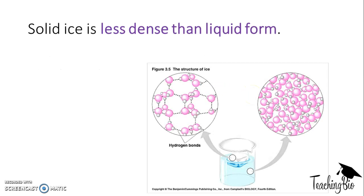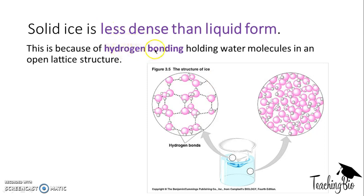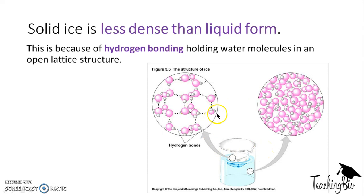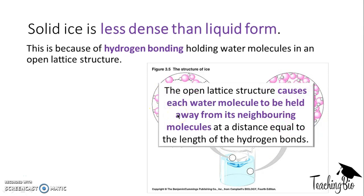Solid ice is less dense than liquid water — this is why icebergs float on water, or why ice cubes float on the surface of your drink. This is because hydrogen bonding holds water molecules in an open lattice structure. As you can see, the open lattice structure holds the water molecules quite far apart. Each water molecule is held away from its neighbouring molecules at a distance equal to the length of the hydrogen bonds, and that's what gives ice this open lattice structure.